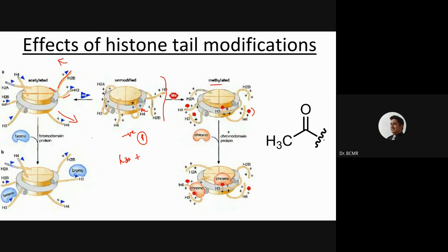Proteins with bromodomains recognize acetylated amino acid residues such as lysine on histone tails. These could be histone acetyltransferases or chromatin remodeling complexes. Proteins that recognize methylated amino acid residues on histone tails are referred to as chromodomains.